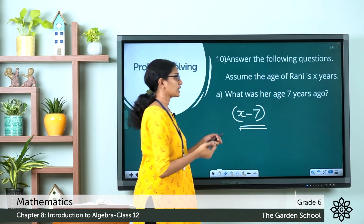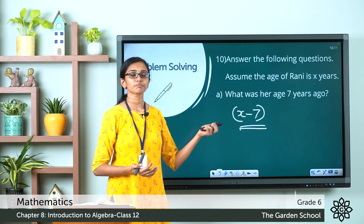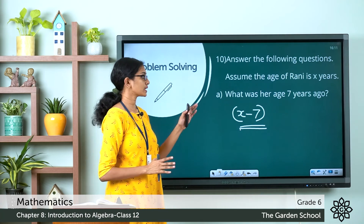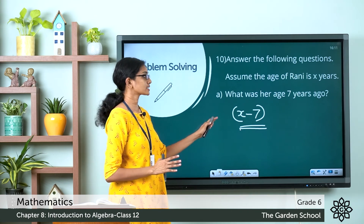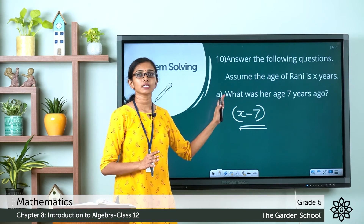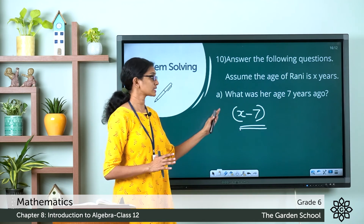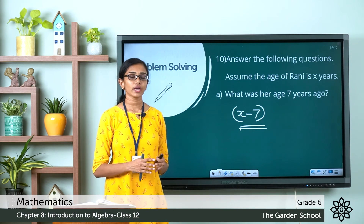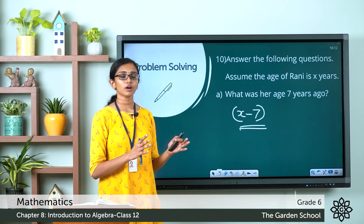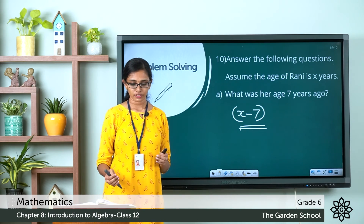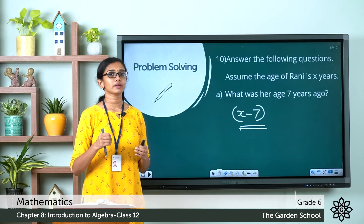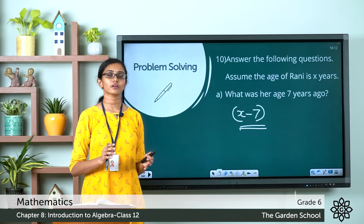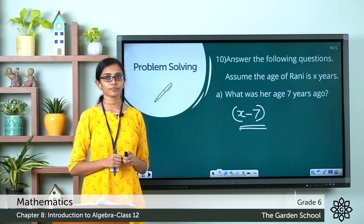So Rani's age before 7 years can be represented by the expression X minus 7, where X is her current age. In the same way, form algebraic expressions based on each requirement given in the question and note the expressions in your notebook.